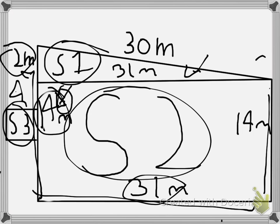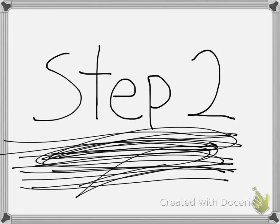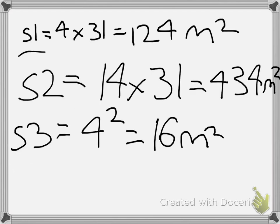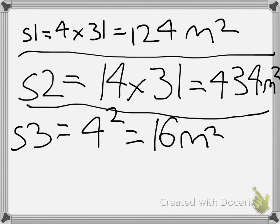Next, step 2: We multiply the lengths to get the area for each shape. 14 times 31, 4 squared equals 16. Triangle 1 is 217 meters squared, shape 2 is 434 meters squared, and shape 3 is 16 meters squared.